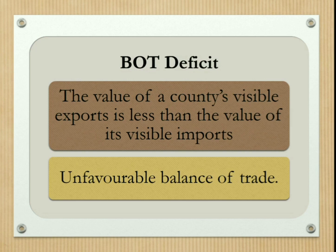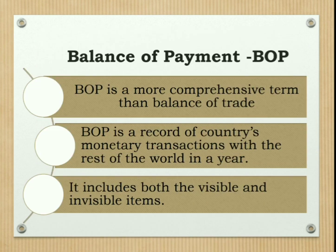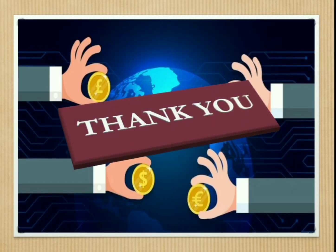The balance of payment, or BOP, is a more comprehensive term than balance of trade. BOP is a record of a country's monetary transactions with the rest of the world, and it includes both visible and invisible items. The main difference between BOT and BOP is that BOT includes only visible items, while BOP includes both visible and invisible items. BOT is a narrow concept while BOP is a wider concept. Happy learning folks, thank you.